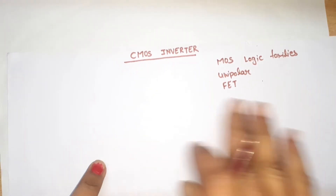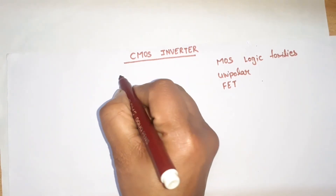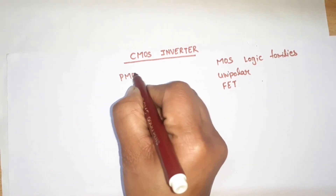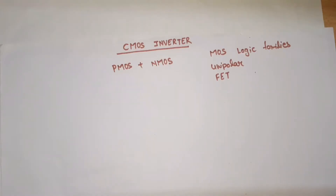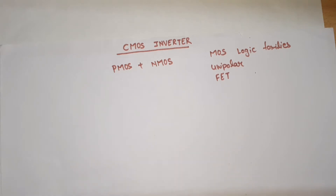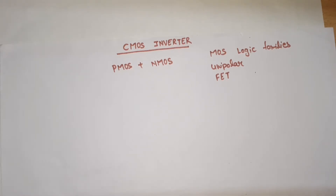CMOS is a combination of PMOS plus NMOS. This means CMOS has the benefit that it takes advantage of both P-channel and N-channel MOSFETs fabricated on the same substrate.